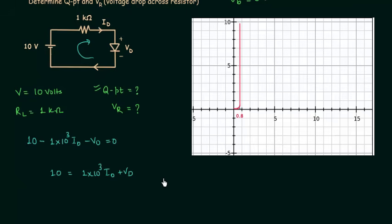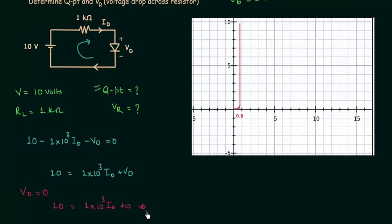Now I want to calculate Id when Vd is equal to 0. Substituting Vd = 0, we have 10 equals 1×10³ × Id plus 0, so Id is simply equal to 10 milliamps.